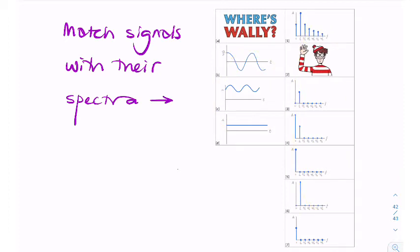We notice that the spectra are discrete, so these are actually Fourier series. So these spectra are all Fourier series. So let's look at the first one.